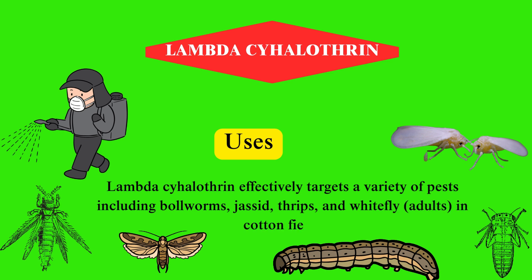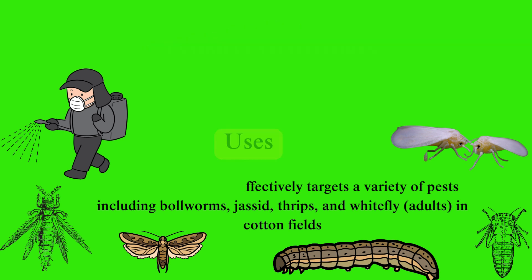Additionally, in rice cultivation, it helps combat stem borer and leaf folder infestations. Mango orchards benefit from its application to manage hoppers, while okra and brinjal crops utilize it to control fruit borer populations.